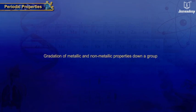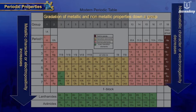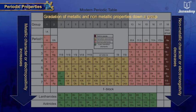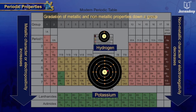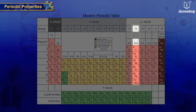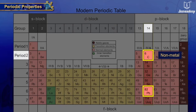Gradation of metallic and non-metallic properties down a group: metallic character increases and non-metallic character decreases from top to bottom in a group, i.e. tendency to lose electrons — electropositivity — increases, and tendency to gain electrons — electronegativity — decreases, because of increase in atomic size with the addition of shells, thus less effect of the nucleus on the electrons in the outermost shell. For example, carbon placed in the 14th group, second period, is a non-metal, whereas lead placed in the 14th — i.e. the same — group but the 6th period is a metal.